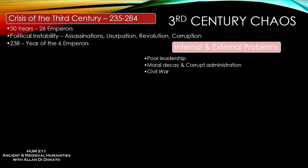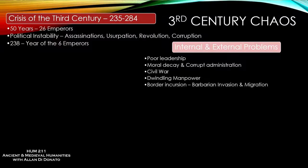Civil war will tear any nation apart, and you see it pop up over and over again. As well as dwindling manpower within the army — you don't have as many men to defend the empire. One of the big threats, especially in the west, are the barbarian tribes on the other side of the border, which are going to continue to migrate into the Roman Empire. Not just because they're trying to take over Rome — that's pretty much not the intention of most of these groups. A lot are coming in just for land and security because other tribes were pushing them out of their earlier territories.